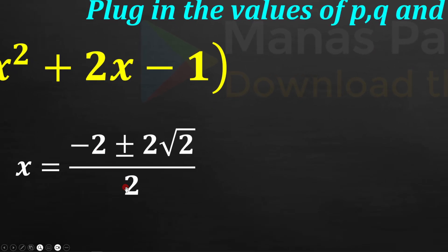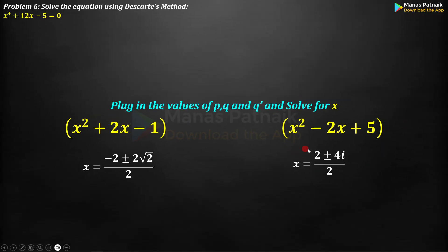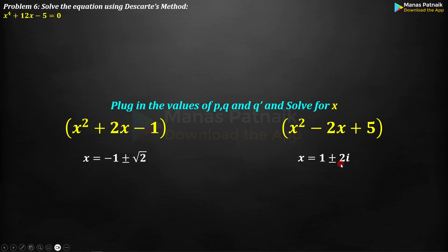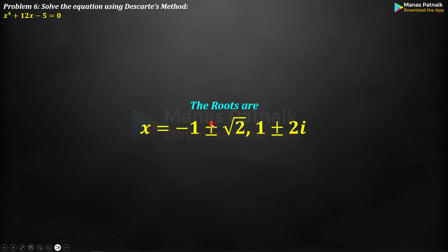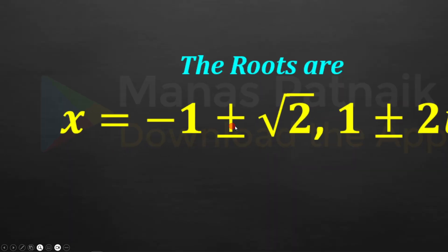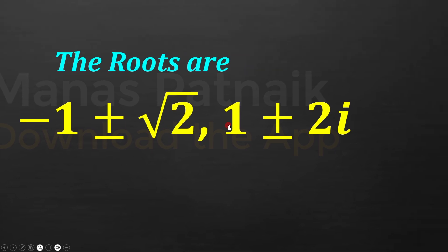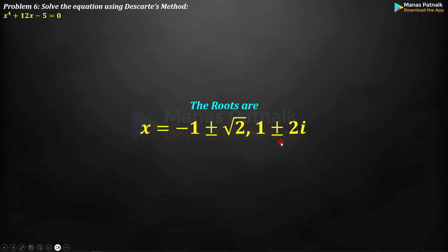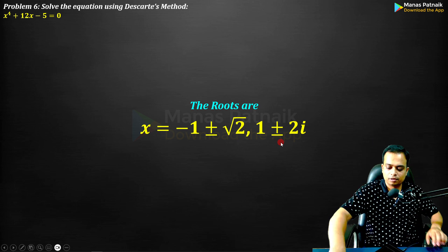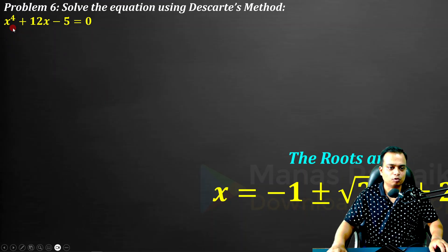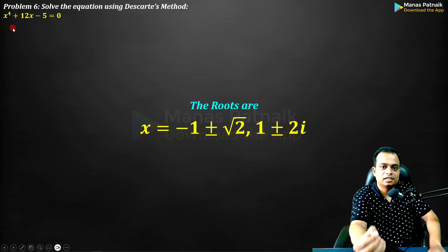So the four roots of the quartic equation are: −1 + √2, −1 − √2 (two real roots), and the complex conjugate pair 1 + 2i and 1 − 2i. These are all four roots found using Descartes' method.